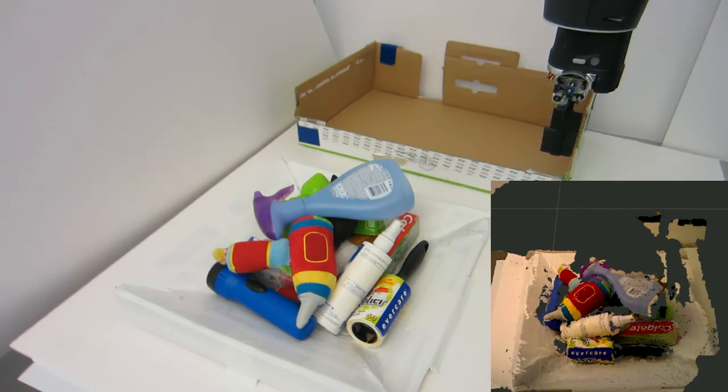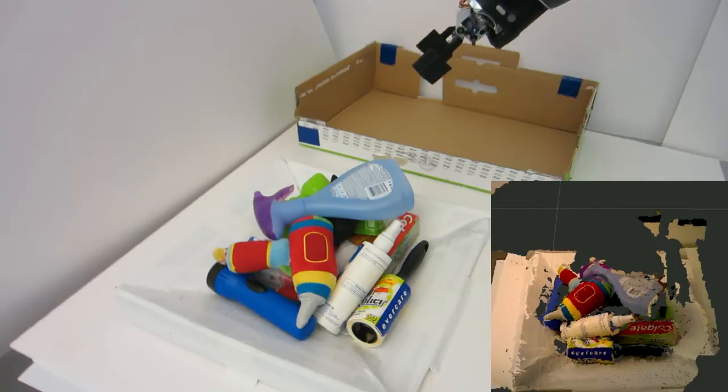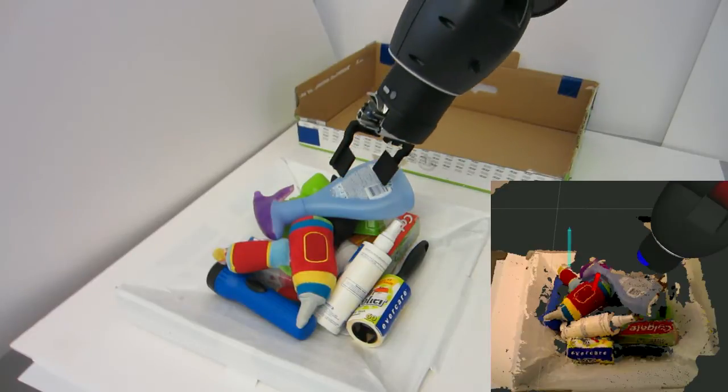We are interested in grasping novel objects in dense clutter, such as that seen here. In this box are ten novel objects that the robot has never seen before. The objects were placed in this box randomly.